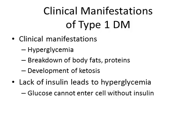What's actually happening is the body begins breaking down fats and proteins, and you can see ketones forming, which leads to DKA that is often a presenting manifestation. They have a lack of insulin, and the glucose they do have is unable to get into the cell without insulin, so they become hyperglycemic.